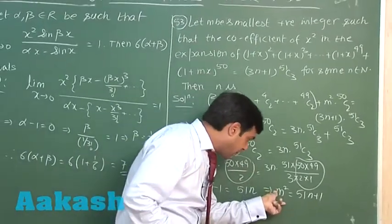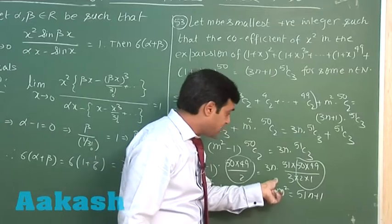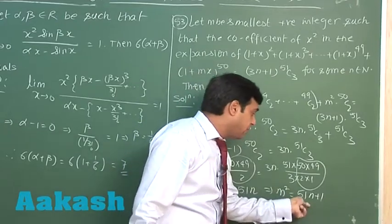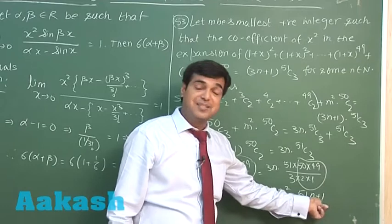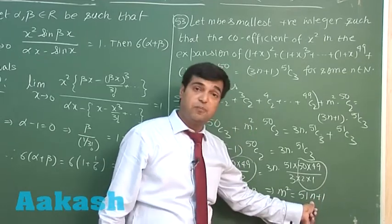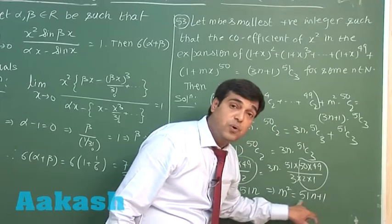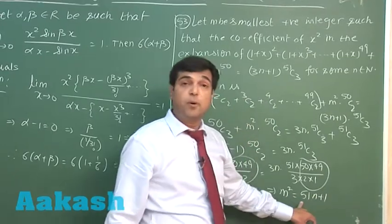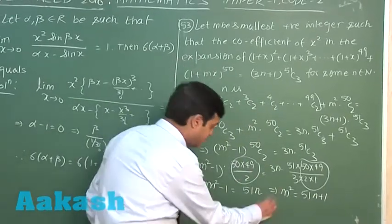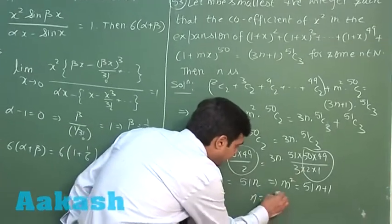I have to find the number m such that the square is equal to 51n plus 1. Starting substituting the values for n from 1, we can see on substituting n equals 5, m square equals 256, we obtain the smallest positive integer. The value for n is obtained as 5.